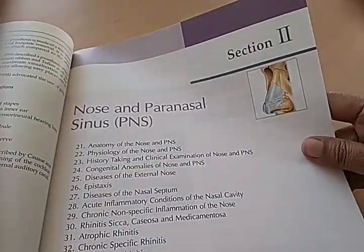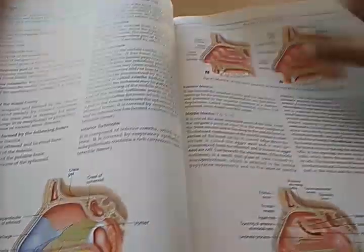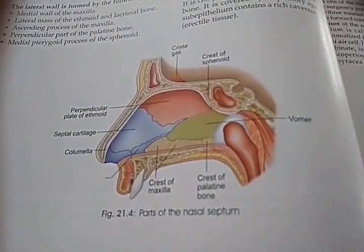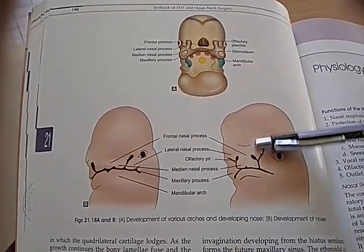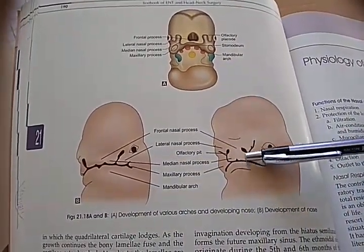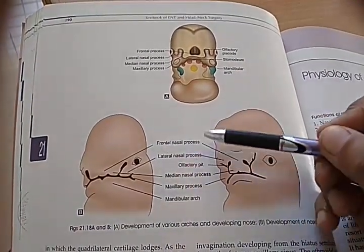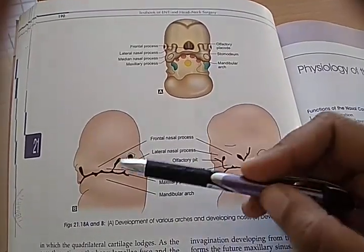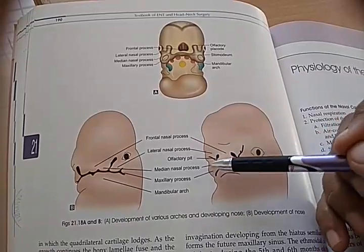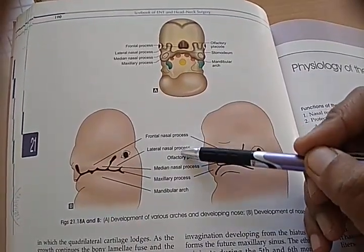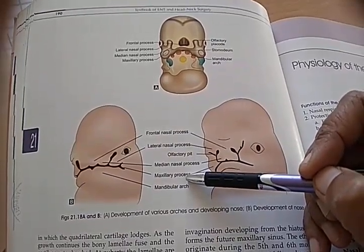We have moved on to the nose and paranasal sinuses — parts of the nasal septum. Here they are talking about the development of the nose: frontal nasal process, lateral nasal process, olfactory pit, median nasal process. So three nasal processes: median, lateral, frontal, plus a maxillary process and mandibular arch.